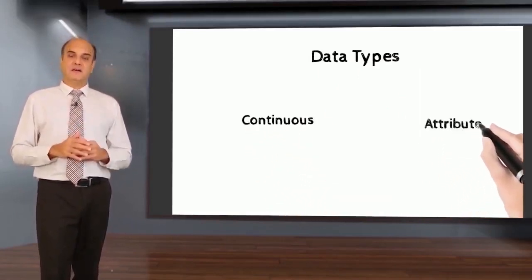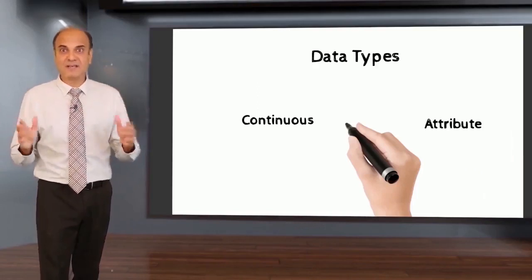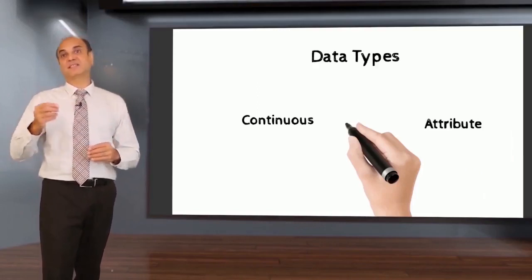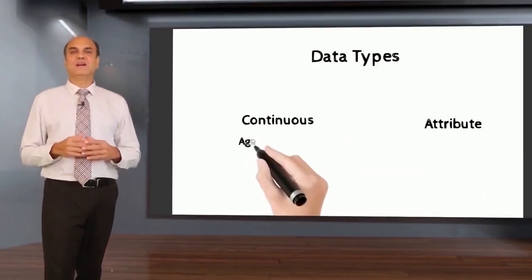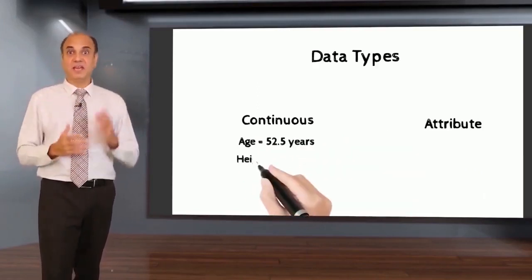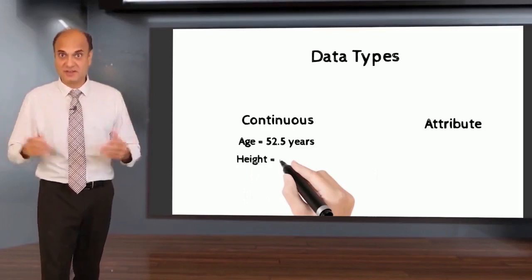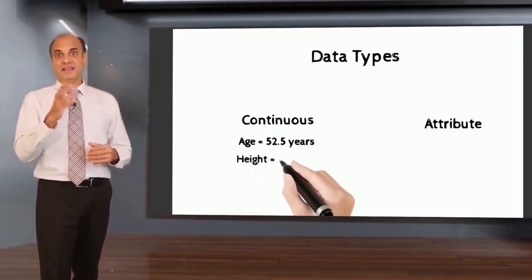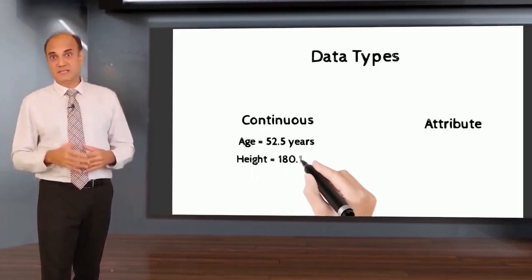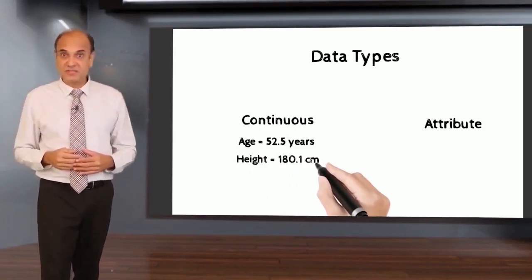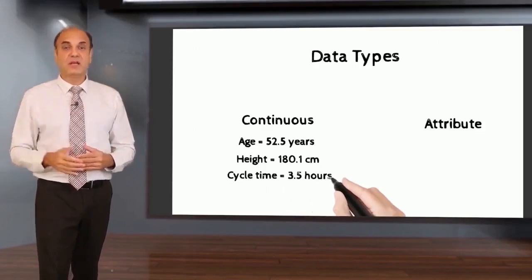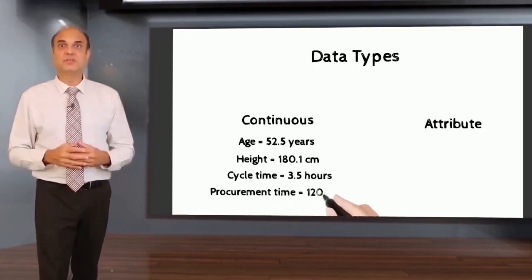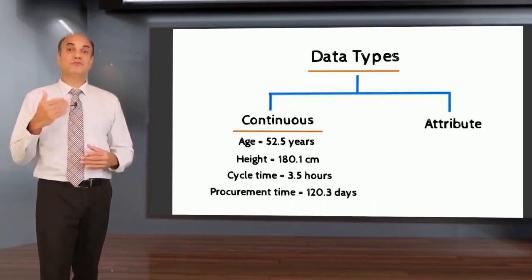Continuous data can be represented on a number line. It can have a decimal place and a unit. For example: age is 52.5 years, height is 180.1 centimeters, cycle time of a process is 3.5 hours, or procurement time in an organization is 120.3 days.